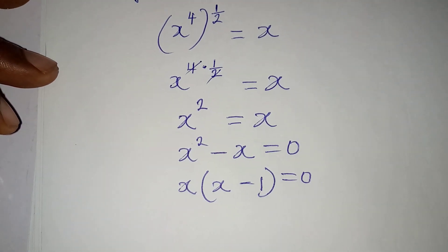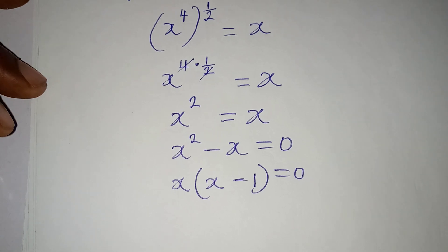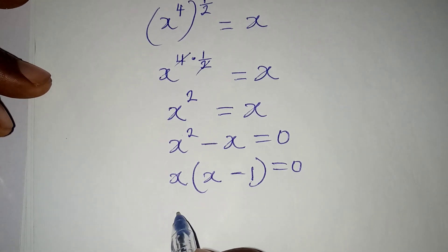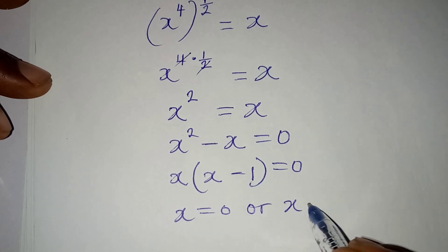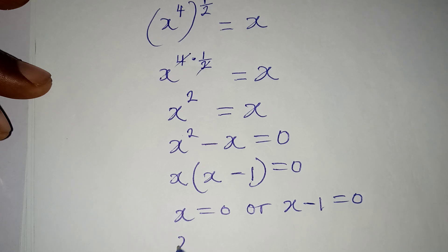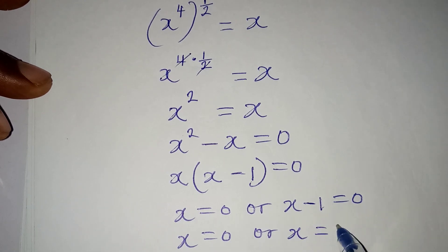This is the point where I apply zero product rule. So I have x to be equal to 0, or x minus 1 to be equal to 0. x equals 0 or x equals 0 plus 1. x remains 0 or x is equal to 1.